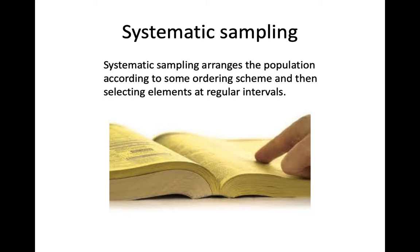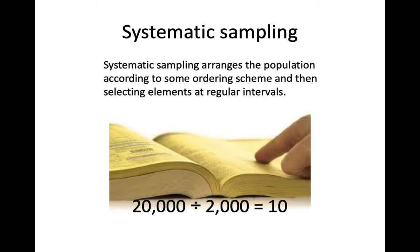Another technique is systematic sampling. The population is arranged according to some ordering scheme, and then people are selected at regular intervals. The size of the interval is determined by taking the size of the population and dividing by the desired sample size. For example, if your population has 20,000 people and you want a sample of 2,000, the appropriate sampling interval would be 10 because you divide 20,000 by 2,000.